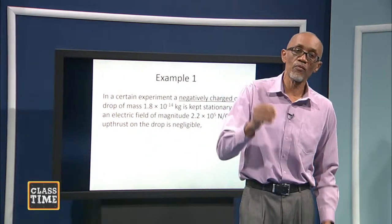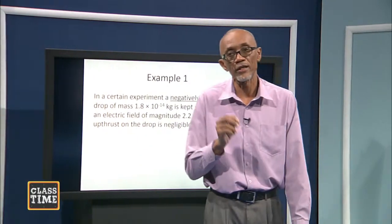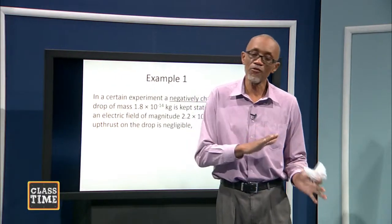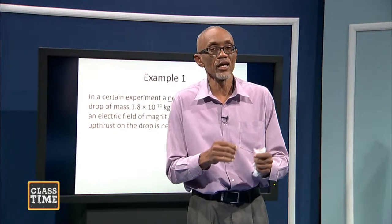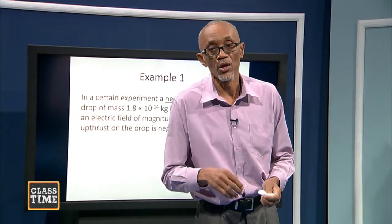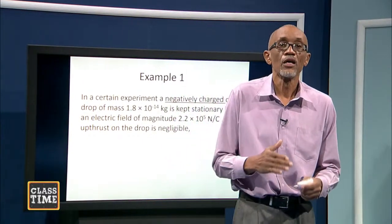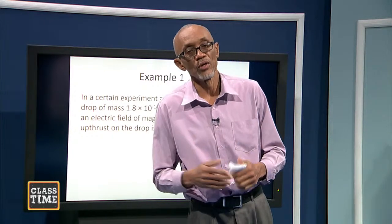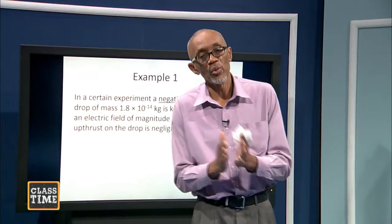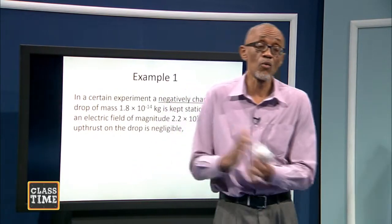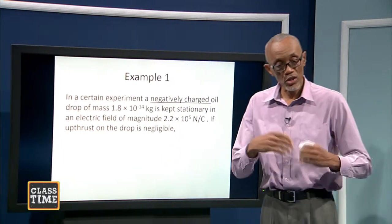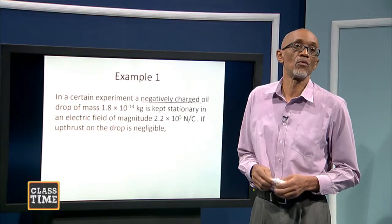You can use either the Newton per Coulomb or the volt per meter for the electric field strength — you might find that in calculations when balancing units on either side of the equation, using volt per meter might be more convenient in one case than Newton per Coulomb. But both are equivalent, and using either is perfectly in order.